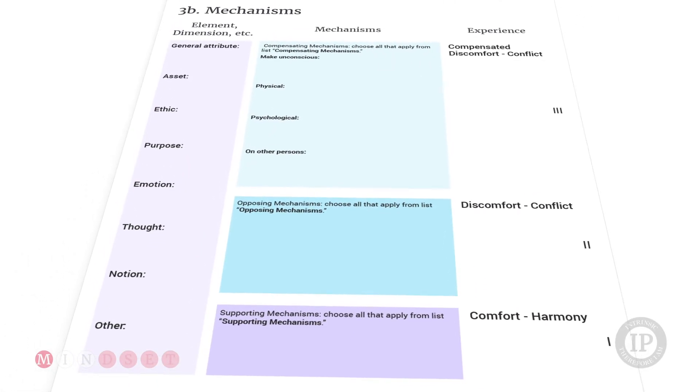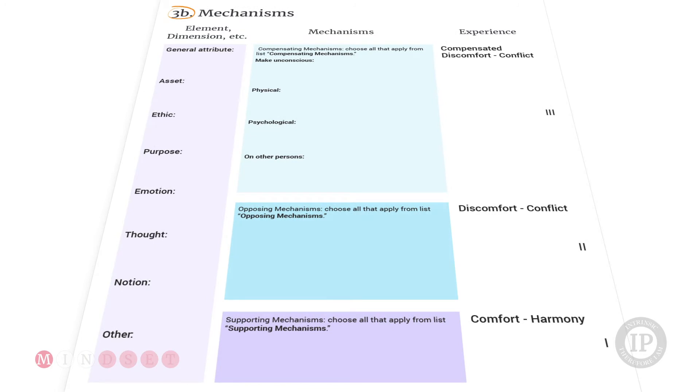So now let's use template 3b to practice understanding and learning mechanisms and their dynamics by applying it against an emotion. We could say applying it against calm or serenity.